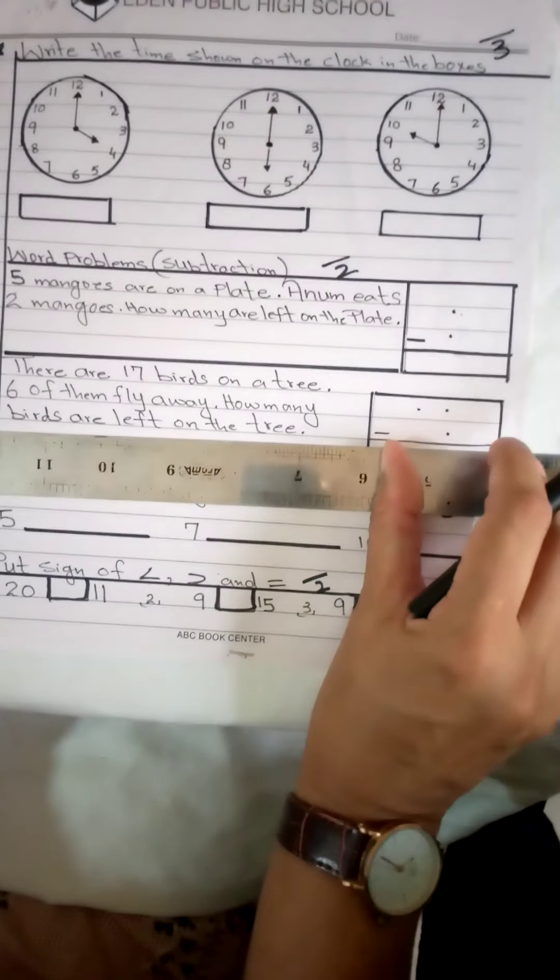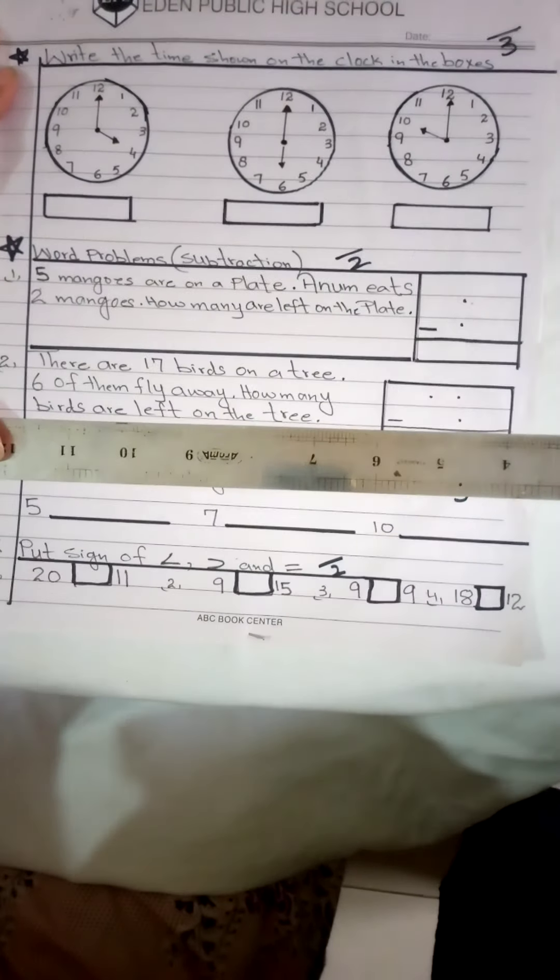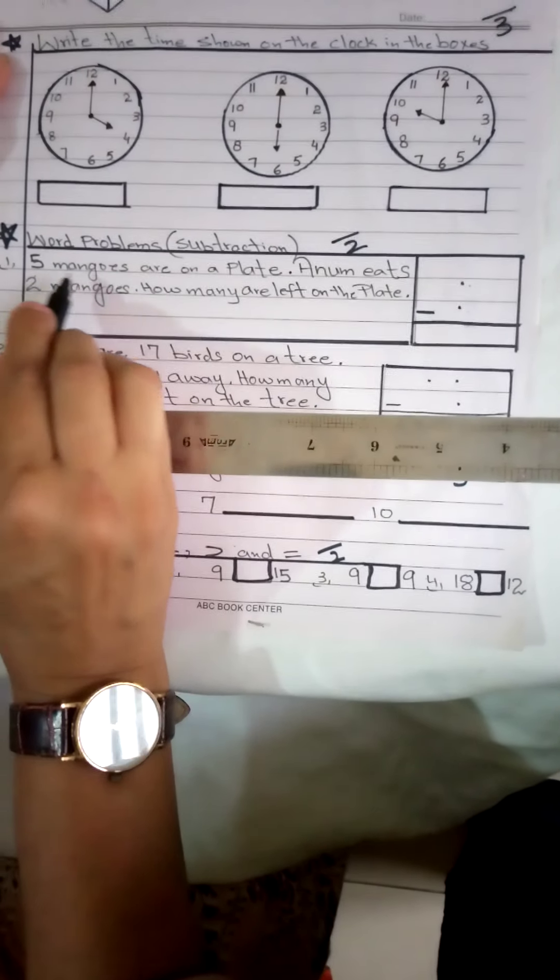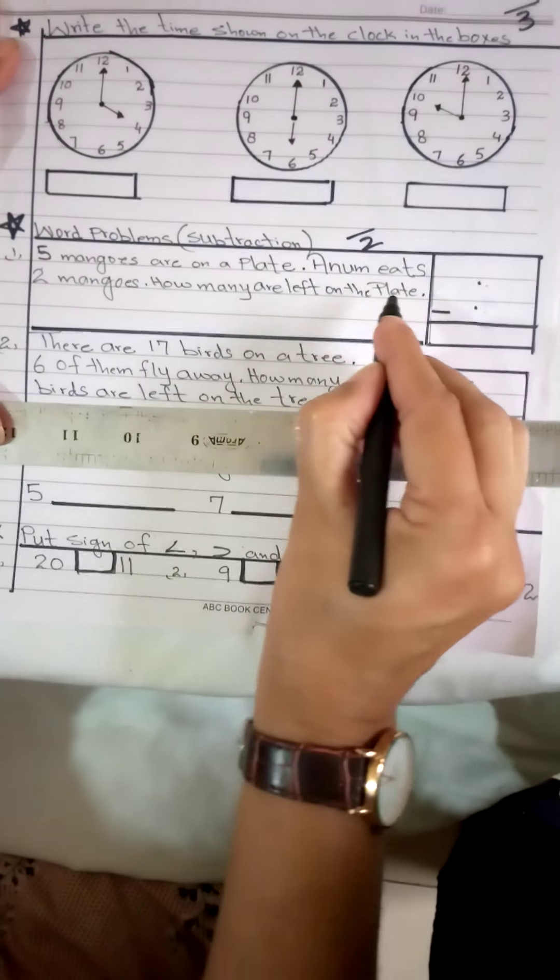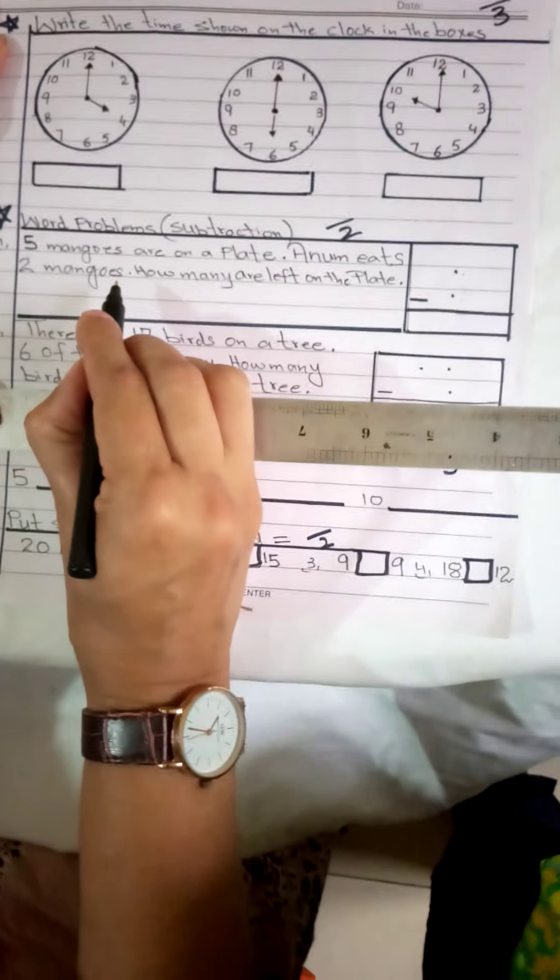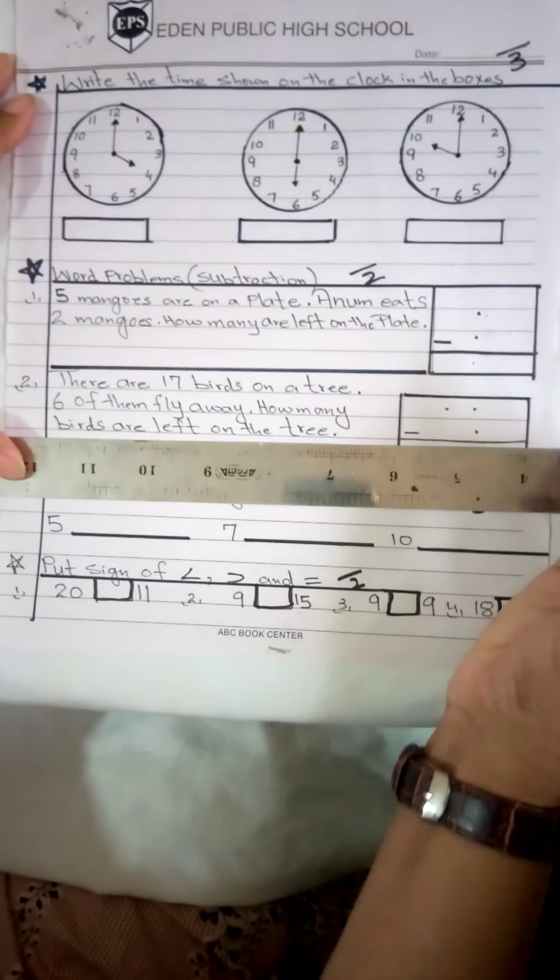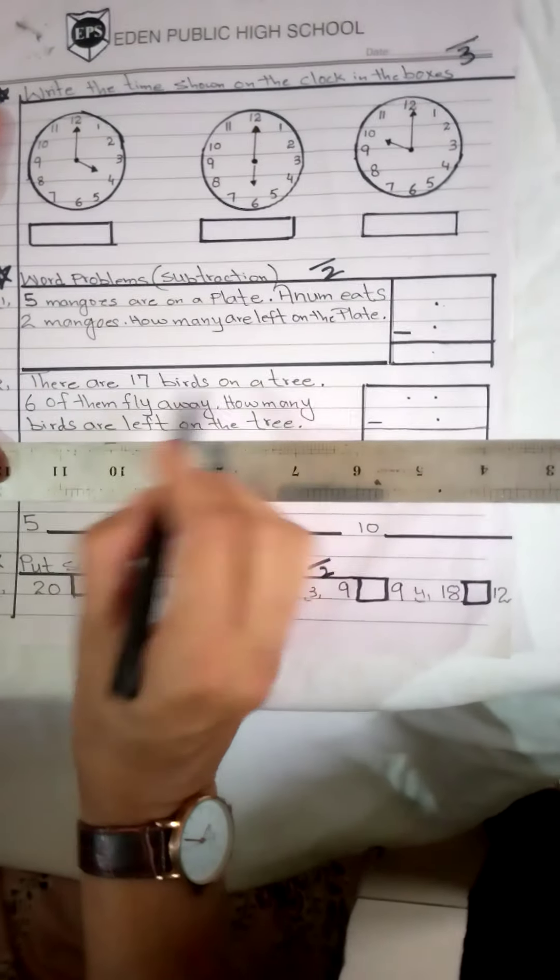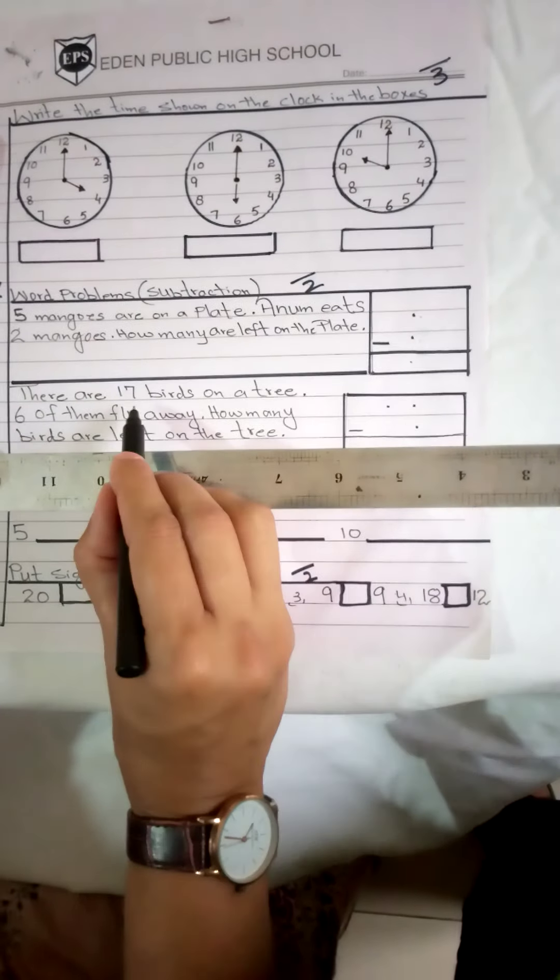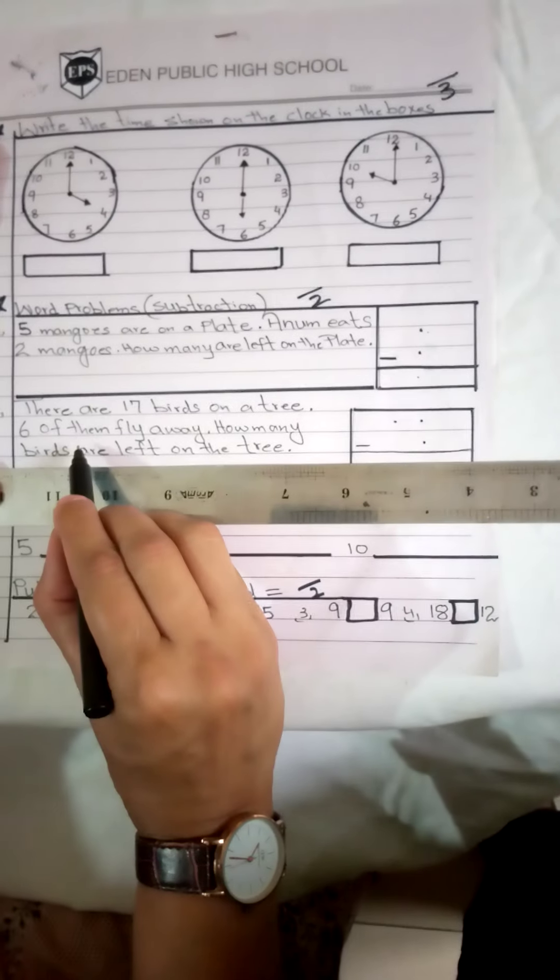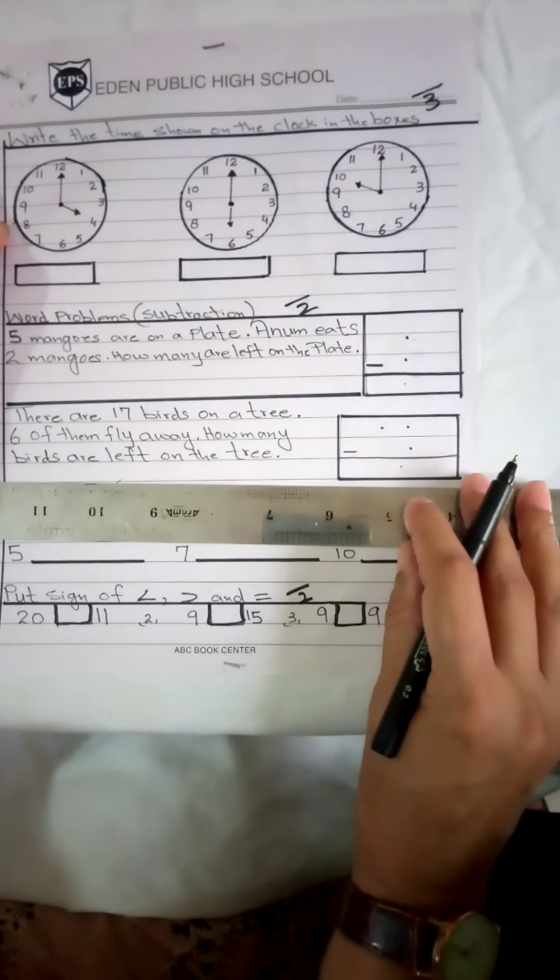Okay, now we are going to our second work. What is the second work? Word problem sums. Here is subtraction. You have done addition, now you will do subtraction. Now the first sum says: five mangoes are on a plate, Anam eats two mangoes. How many mangoes are left on the plate? In one plate, five mangoes, Anam ate two mangoes. Now you will tell me, how many mangoes are left on the plate? You will tell me the answer here. Number two: there are seventeen birds on a tree, six of them fly away. How many birds are left on the tree? So tell us how many birds will be on the tree. You will write the answer here.